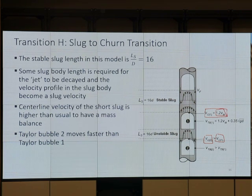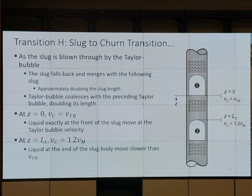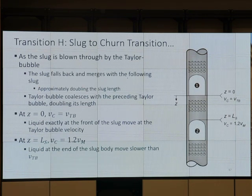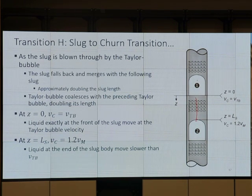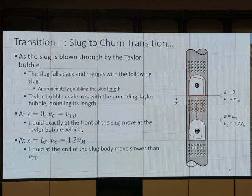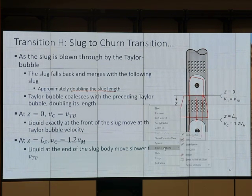Let's look at the actual velocity inside. When we zoom in, the slug rolls through — we have some film fallback, merged with the following one. When it merges and breaks, it rolls through and the slug body becomes double in size due to the merge. Taylor bubbles also coalesce and double in length.